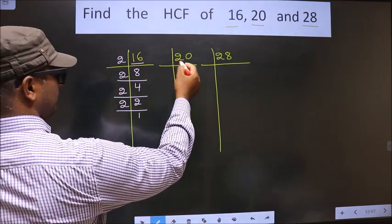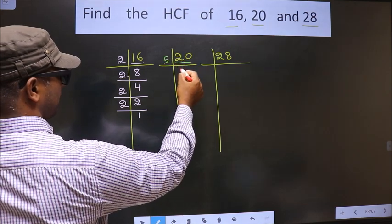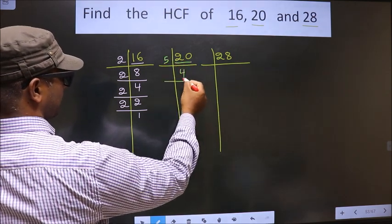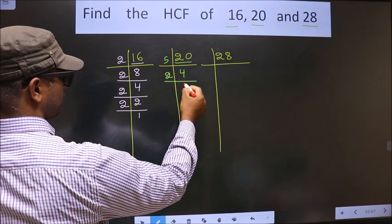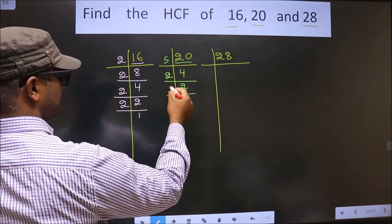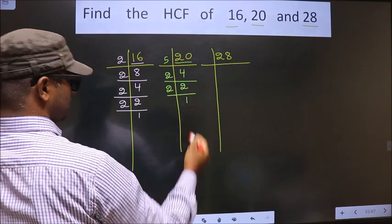Now here we have 20. 20 is nothing but 5 times 4. Now we have 4. 4 is 2 times 2. Now 2 is a prime number so we take 2 times 1 is 2.